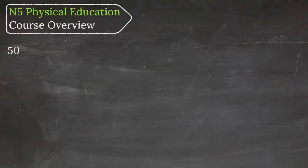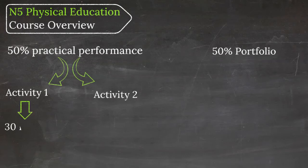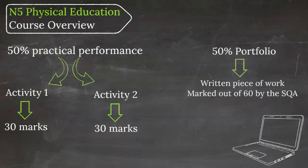So what's involved in National 5 PE? Well, the course itself is split 50% practical, 50% theory. You will be assessed in two physical activities, each of which will be marked out of 30 by your PE teacher. The theory element of the course is a written piece of work marked out of 60 and sent to the SQA. This replaces the end of year exam.